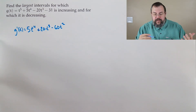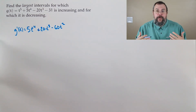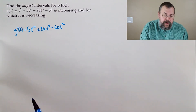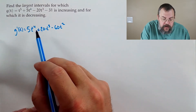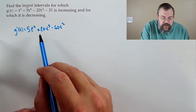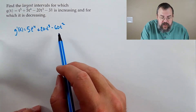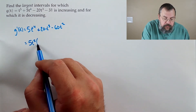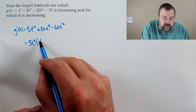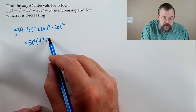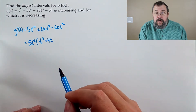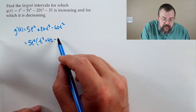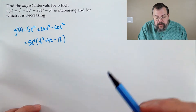Similar process: it's never undefined, so we need to figure out where it's zero — time to factor. We see all coefficients are multiples of 5, and they have powers of t. Let's pull out 5t squared, leaving us with t squared plus 4t minus 12.